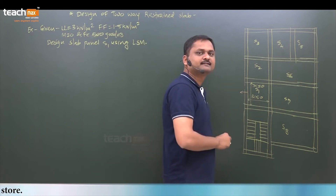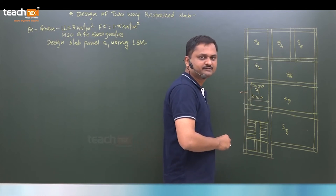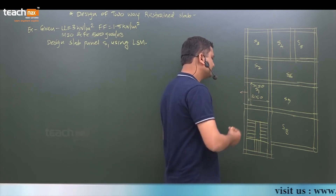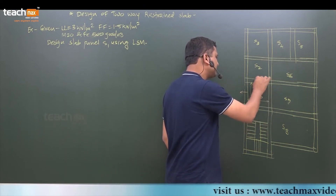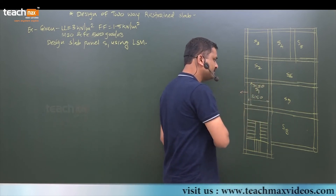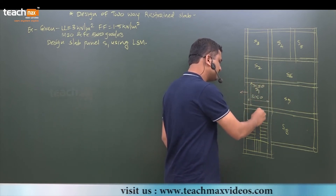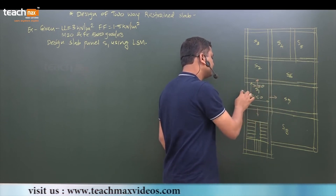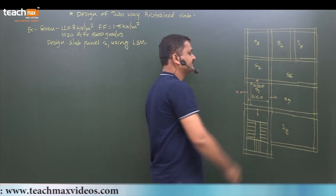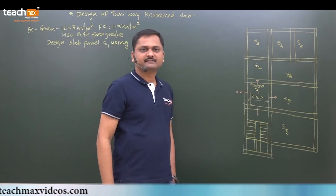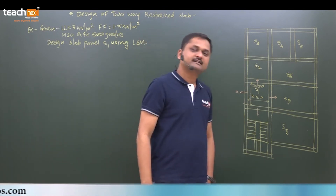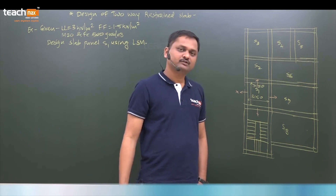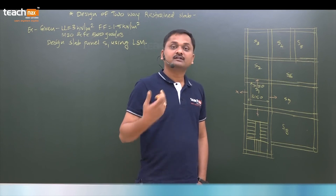The longer edge is discontinuous, meaning all three remaining edges are continuous. There is slab provided on this side, on this side, and on this side, but there is no slab towards this side. So we can say three edges are continuous but one edge is discontinuous. Now you have to determine whether the longer or shorter edge is the discontinuous one.